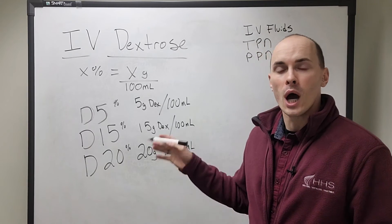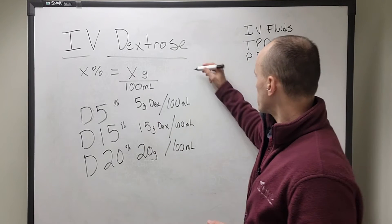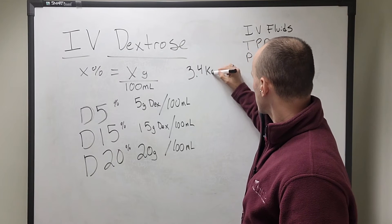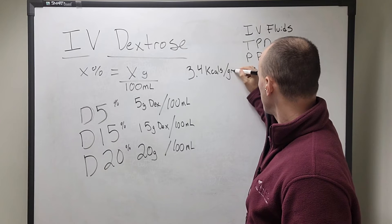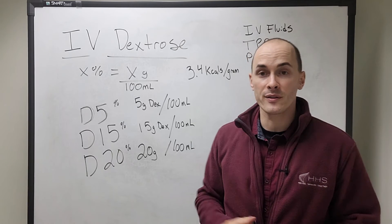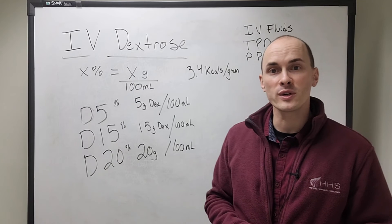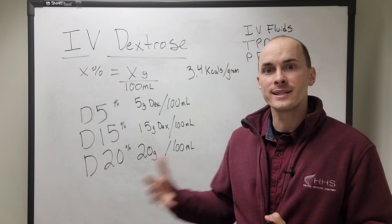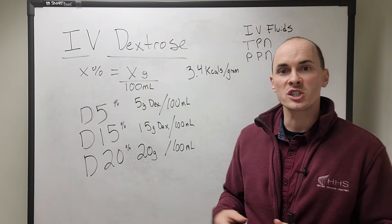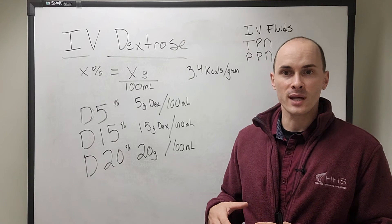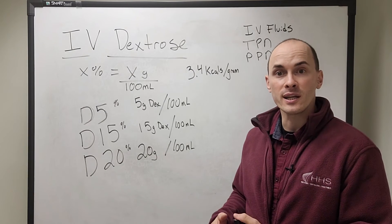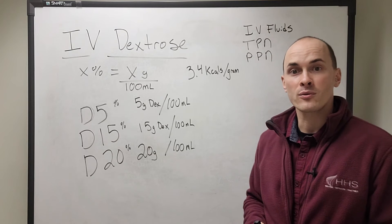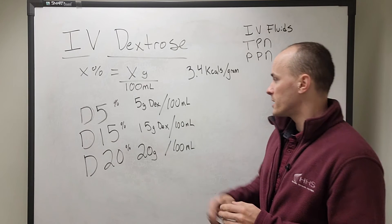Now remember, unlike other carbohydrates, dextrose is 3.4 kcals per gram. So you can see now, based on these dextrose-containing fluids, that we're actually going to be giving our patients calories in the form of dextrose, and that's going to be important for nutrition support. When we decide how many calories and protein they need, we're going to have to take into consideration how many calories they're getting from dextrose or this simple carbohydrate.